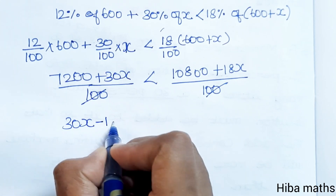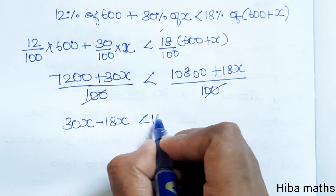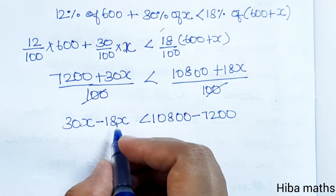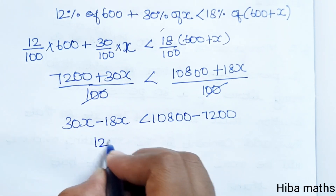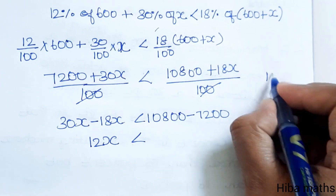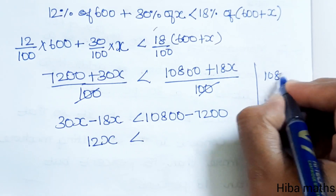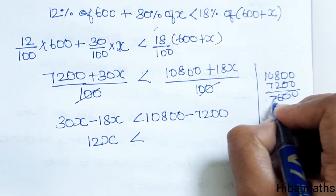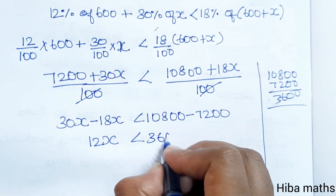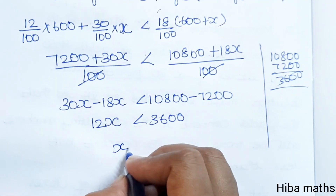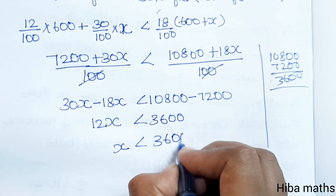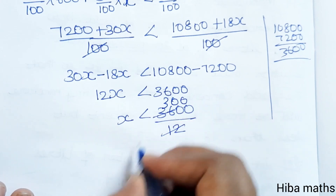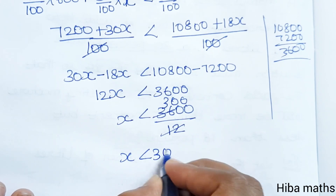Solving the second inequality: cancelling 100 from both sides, we get 7200 + 30x < 10800 + 18x. Rearranging: 30x minus 18x < 10800 minus 7200, giving 12x < 3600. Therefore x is less than 3600 divided by 12, which equals 300. So x is less than 300.